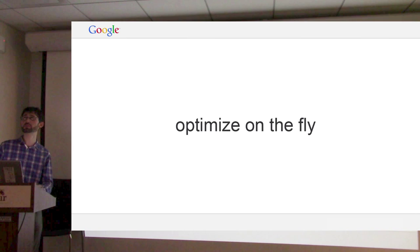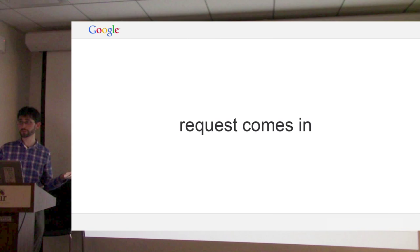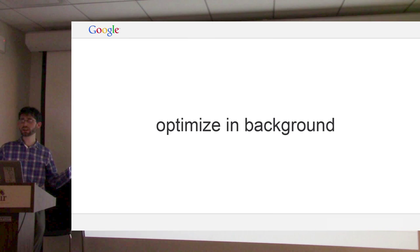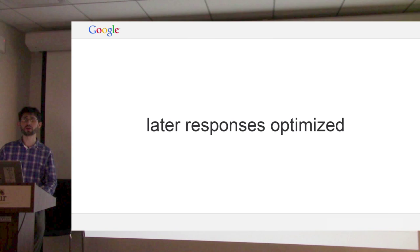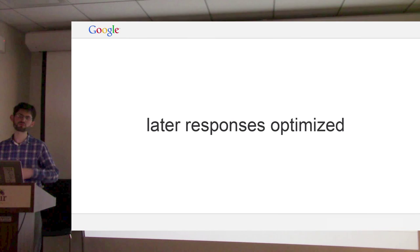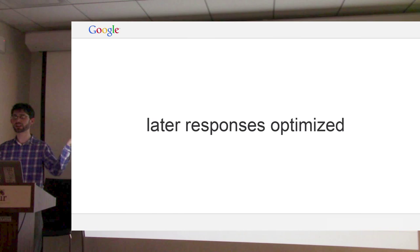It's all open source. Mod PageSpeed does its optimization on the fly, which means a request comes into the web server and the web server optimizes it in the background. The first request is usually not optimized because we don't want to delay that response — we want to send something out as quickly as possible. But we can cache our optimizations, and then later responses are optimized. Generally pages get loaded many, many times, so that first request doesn't matter too much. You don't have to know in advance everything on your site; you can just turn it on and it discovers the stuff going through your server and optimizes.